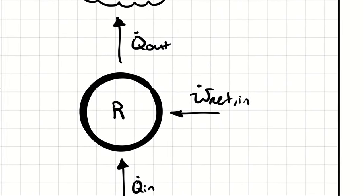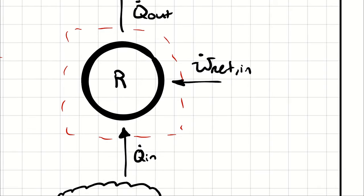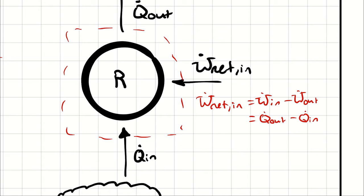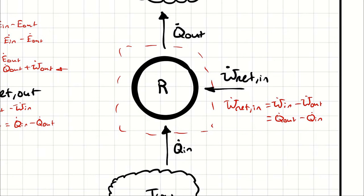Similarly, for the refrigeration cycle, drawing the same control volume, net work in — which is work in minus work out — equals Q-dot out minus Q-dot in. We can see that visually: if we have four kilowatts of heat transfer in and we are paying one kilowatt of net work in, that energy has to go somewhere. It has to leave as Q-dot out, because there are no other opportunities for that energy to leave the system.